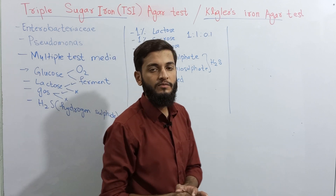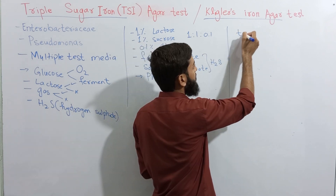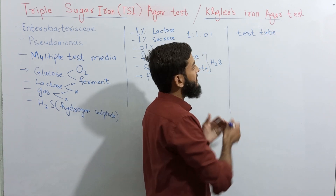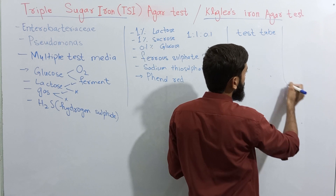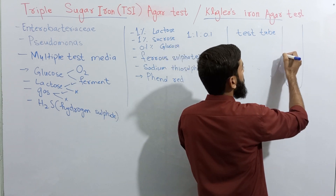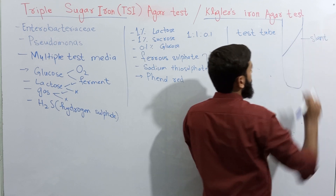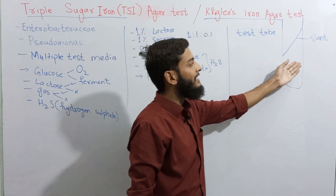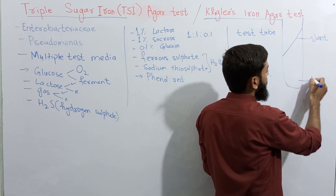Talking about how to inoculate this medium and how it looks — this test is performed in a test tube. Inside the test tube, the agar is present in the form of a slope, which is known as a slant. The slant is like a slope, and the bottom part of this medium is known as the butt. The slant provides more surface area for this test.